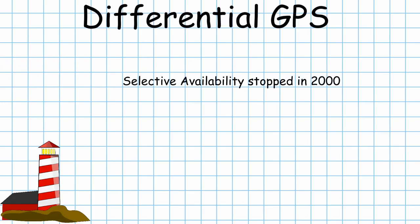Today even though selective availability is no longer an issue, DGPS is still used to provide corrections to GPS signals and increase its overall accuracy.